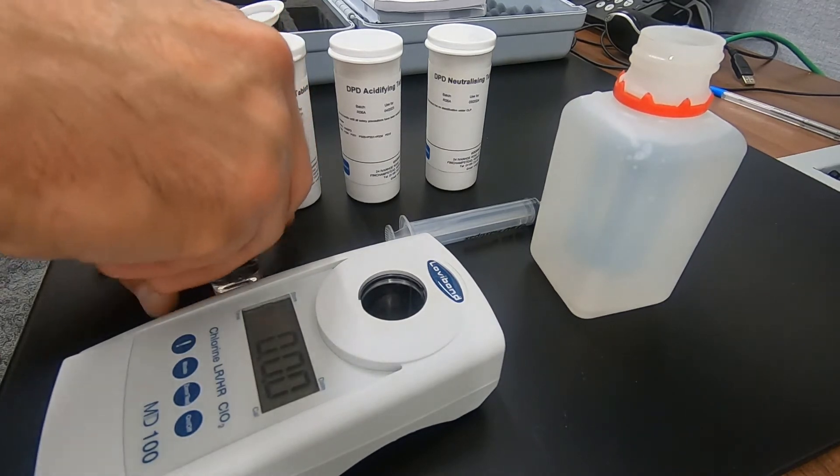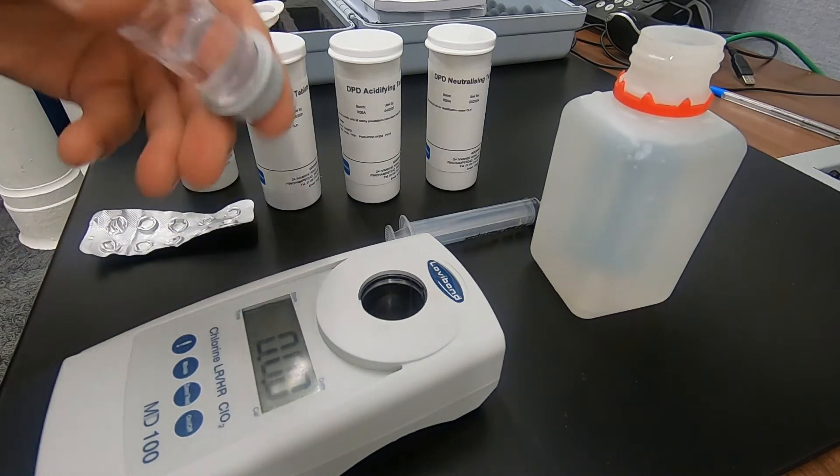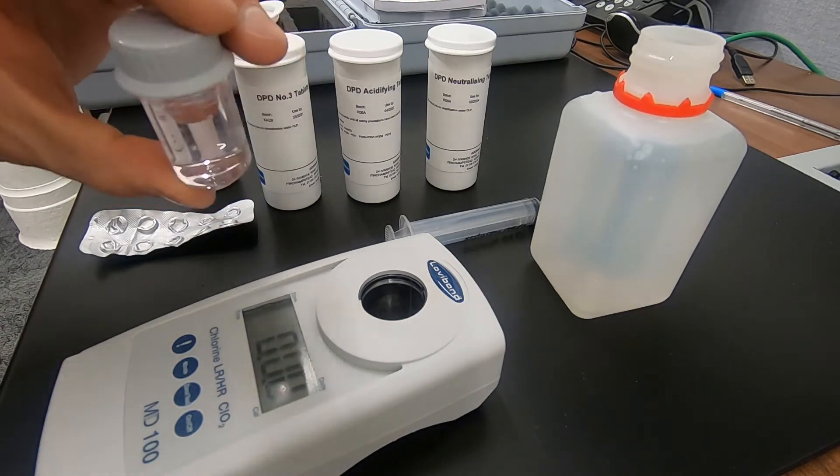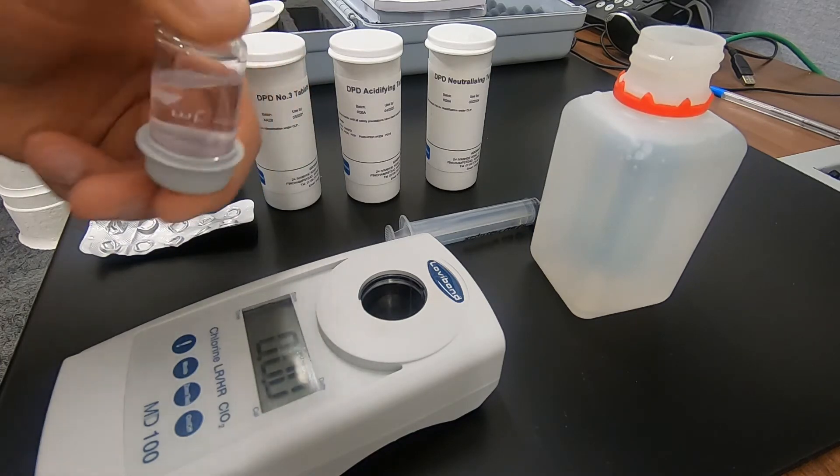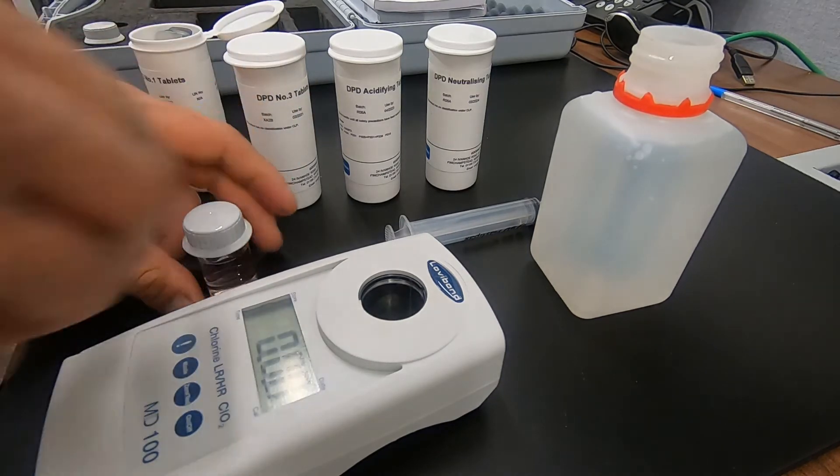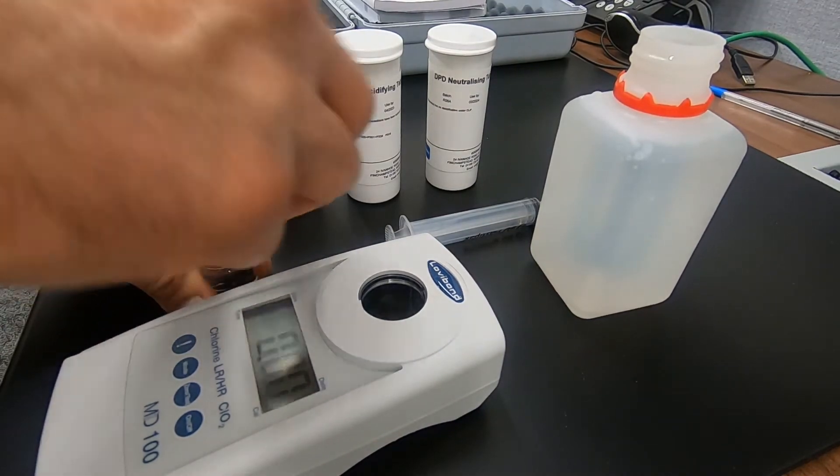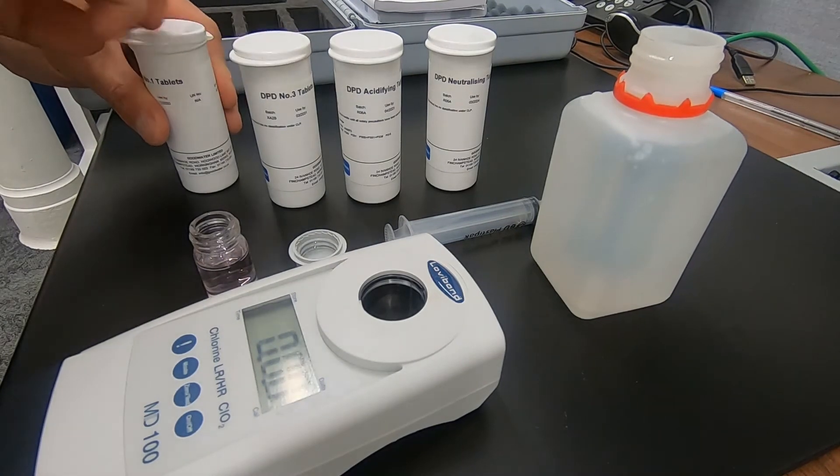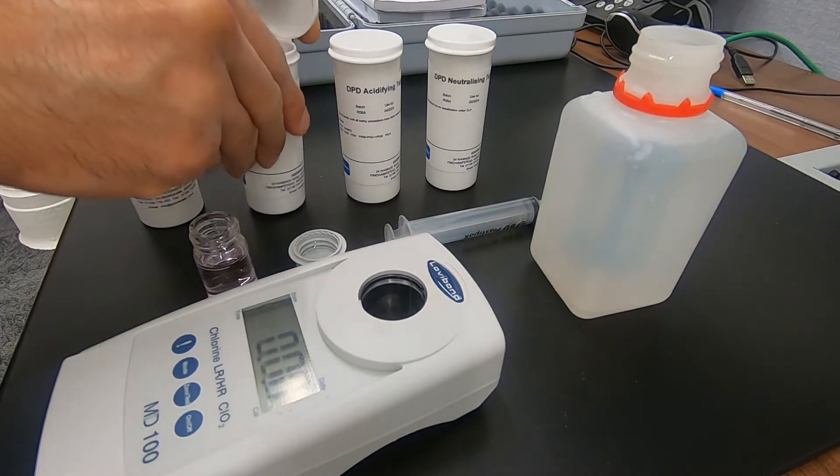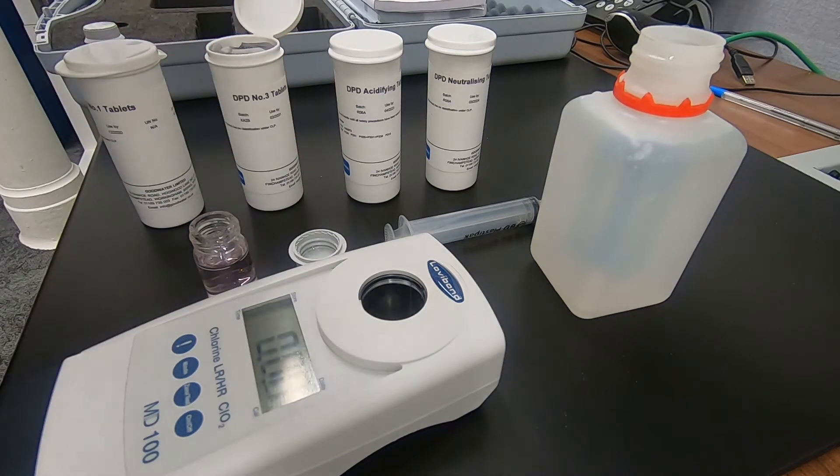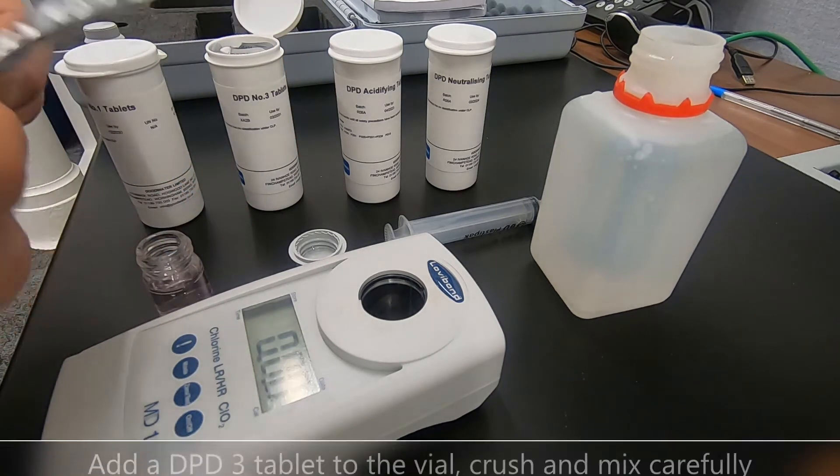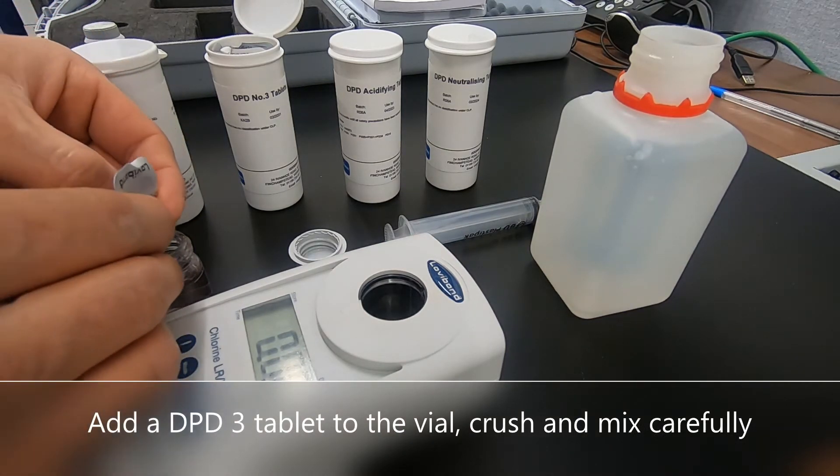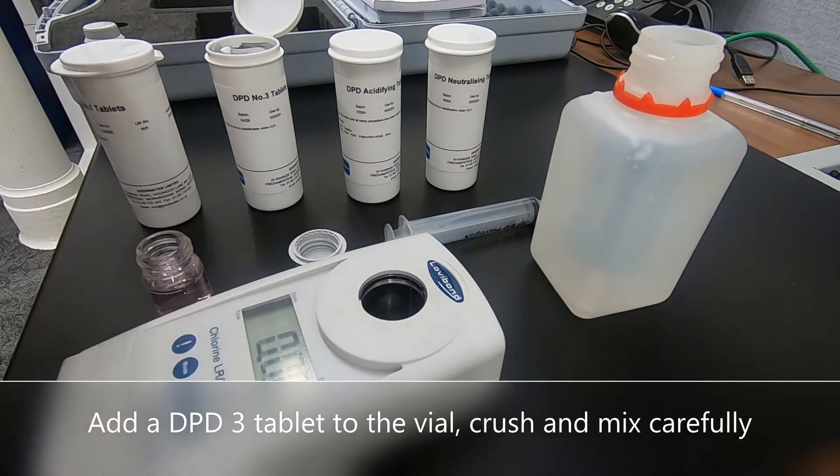Close that vial up and gently invert five or ten times. Take the cap off. Now we need to add a DPD-3 tablet. In the same way try to do this without dropping the tablet on the side and straight into the actual vial itself.